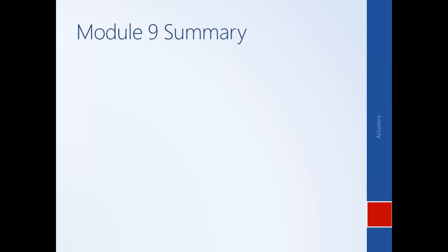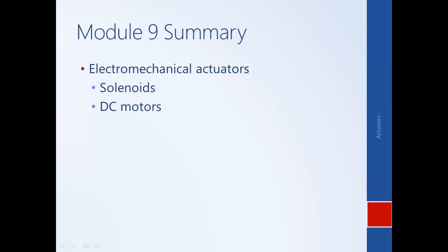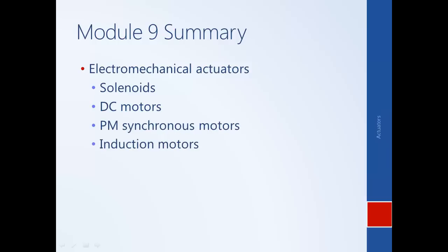This concludes Module 9, where we discussed electromechanical actuators. We first described how solenoids work. Then we discussed DC motors in quite a bit of detail, generating both dynamic and static models. We then discussed important AC machines — the permanent magnet synchronous motor and the induction motor — at a more conceptual level. For more detail on AC machines, a dedicated course in electrical machines would cover these topics further.